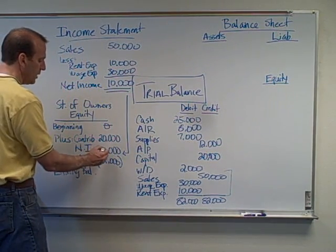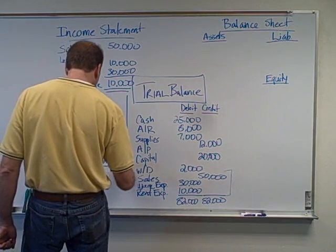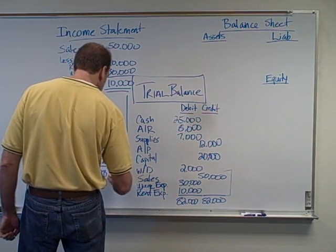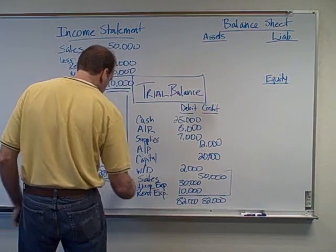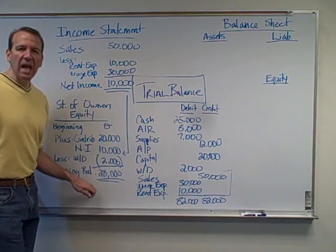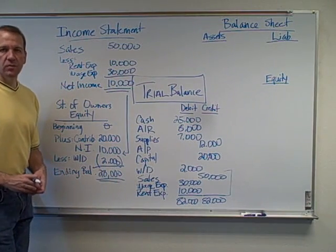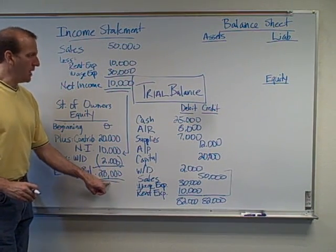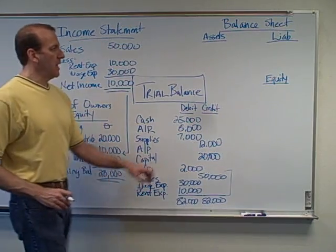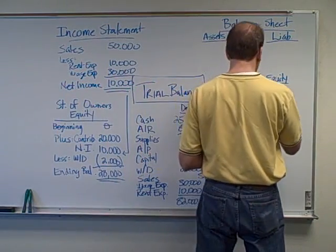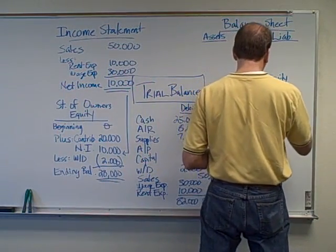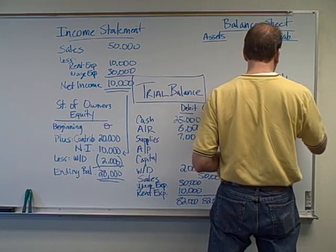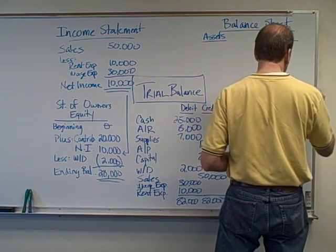So we've got $20,000 plus $10,000 minus $2,000, giving us an ending capital balance of $28,000. We're going to need this capital balance in our equity section, so we'll put capital $28,000.